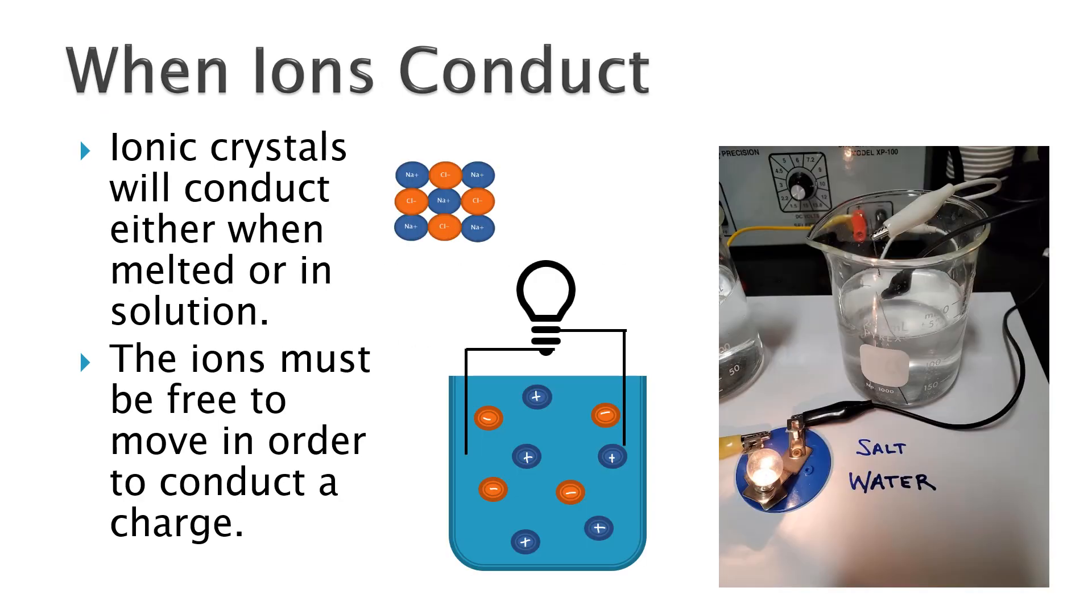The neat thing about ionic compounds though, is if you can dissolve them in water or some other solvent, then the ions are mobile and they're free to move from one place to another. And so you can have a power source here, electrons can then attract particles, charge particles from one side, say this is the positive side and this is the negative side.